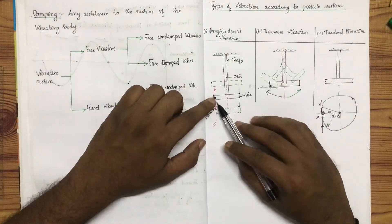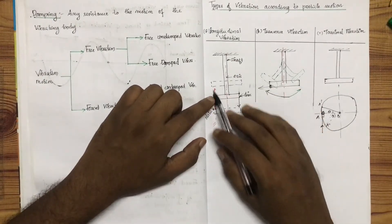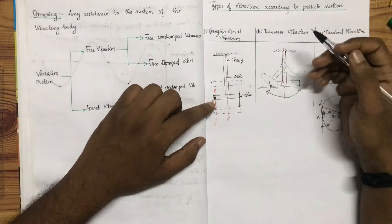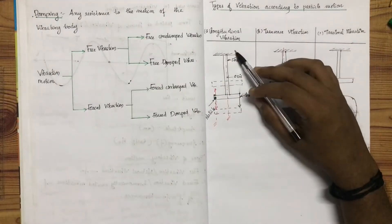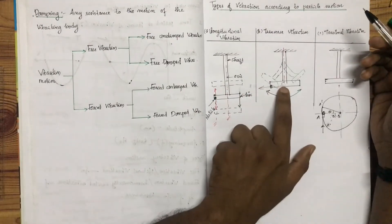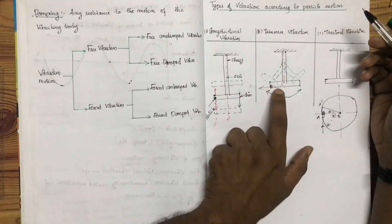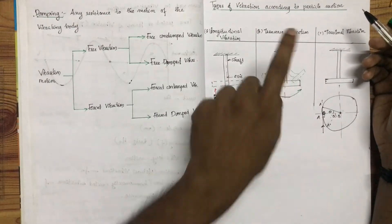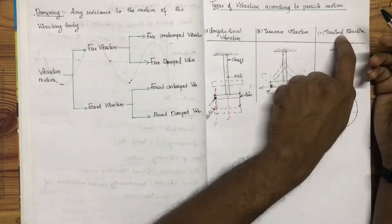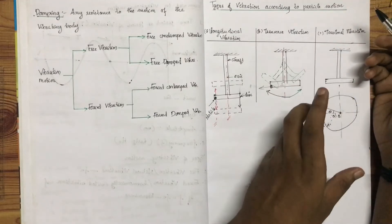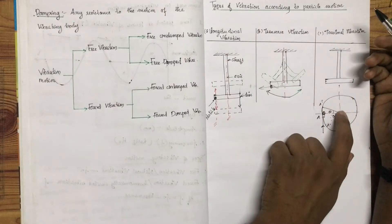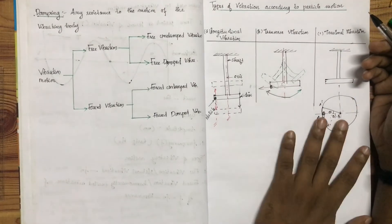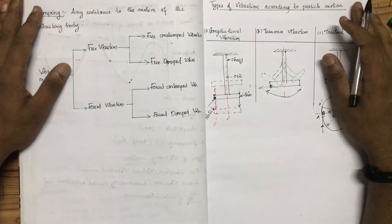Summary: When the particle under vibration is moving parallel to the axis of the shaft, it is longitudinal vibration. If the particle is moving approximately perpendicular to the axis of the shaft, it is transverse vibration. When the particle is moving in a curved path with respect to the center axis, then it is known as torsional vibration. These are the different types of vibrations.